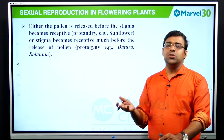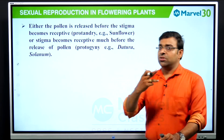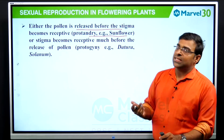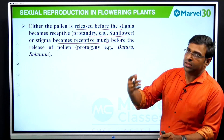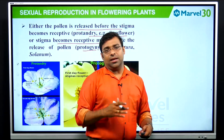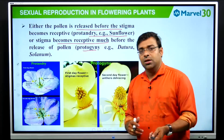In dichogamy, either the pollen grain matures first or the gynoecium matures first. If the pollen grain is released before the stigma becomes receptive, that is protandry — example: sunflower. Or if the stigma becomes receptive much before the release of the pollen grain, that is protogyny — example: Datura and Solanum species, including Solanum tuberosum.